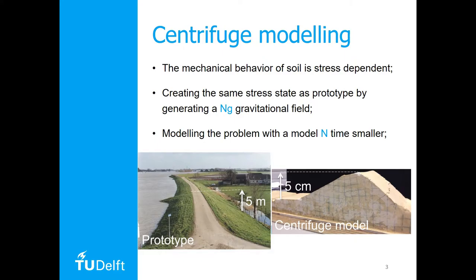Some benefits of small-scale physical modeling such as centrifuge testing are that it is cheaper and faster compared to full-scale testing. Forces are lower compared to full-scale testing. It is possible to control the test conditions to a large extent, which is particularly useful for parametric studies. Tests can be repeated more easily.